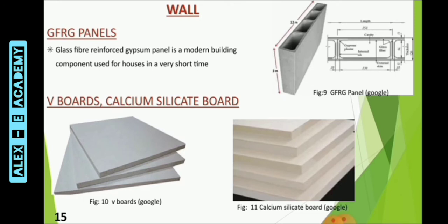GFRG stands for Glass Fiber Reinforced Gypsum. It is made up of high-strength resistant glass fibers bonded with high-density gypsum cement. GFRG panel is a modern building component used for mass-scale construction of houses in a very short span of time. They are basically white in color and have a glazed surface. It is suitable for construction of both external and internal walls, and possesses high flexural strength, shearing strength, compressive strength, and flexibility. This kind of wall does not require any plastering.